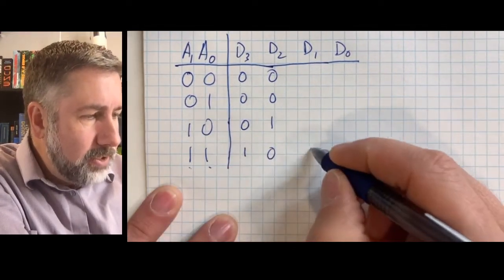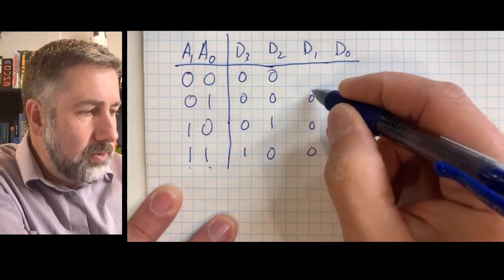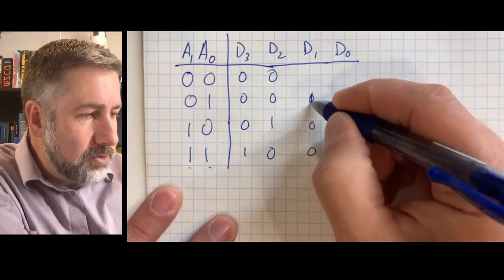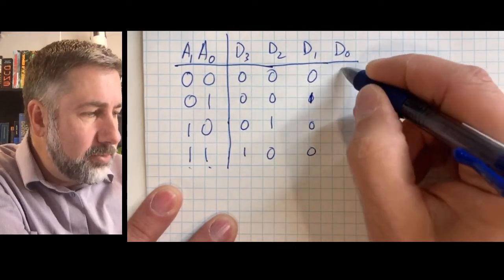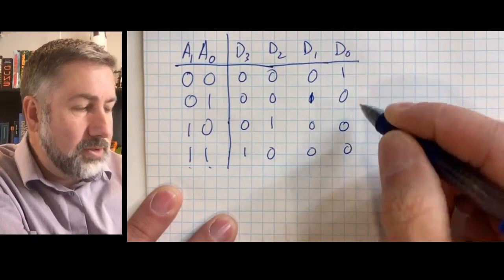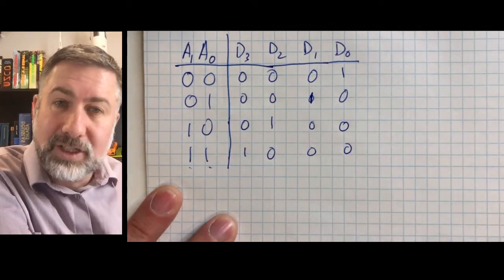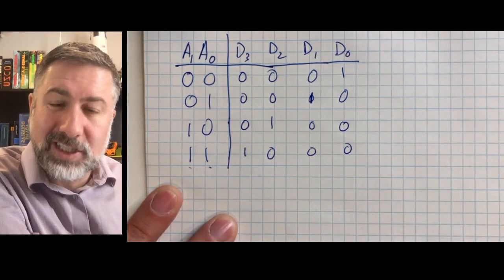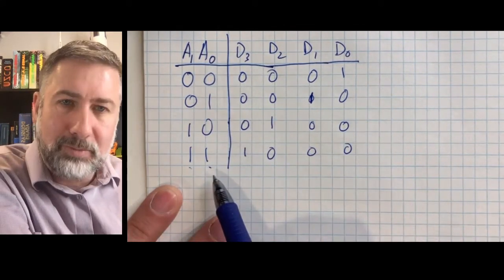D1 should be 0, 0, 1, 0. And D0 should be 0, 0, 0, 1. These are the output functions for each possible minterm in the input combination. So input combination 3 means minterm 3 is active, output D3 is active, and the other three outputs are not active.